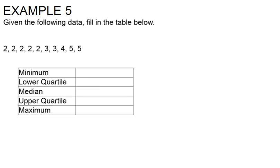In this example, we're trying to find our five number summary here for this set of data. So we want to start by filling out the two easiest ones, which would be our minimum and our maximum.